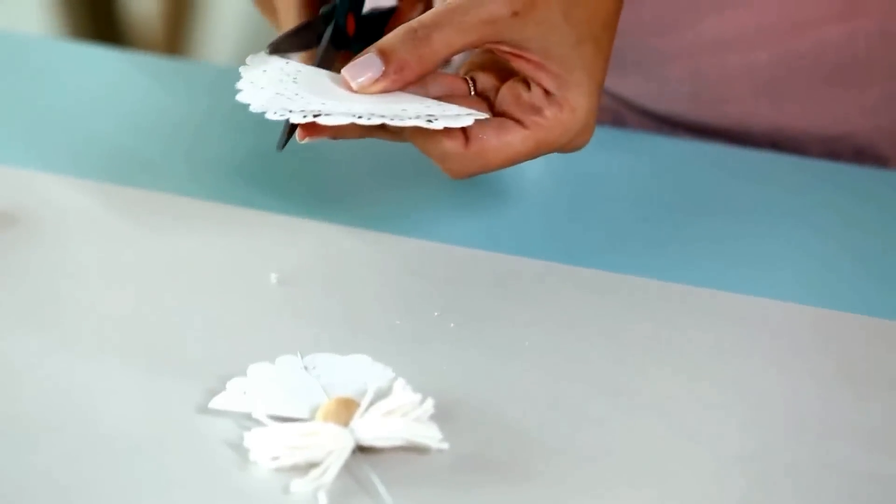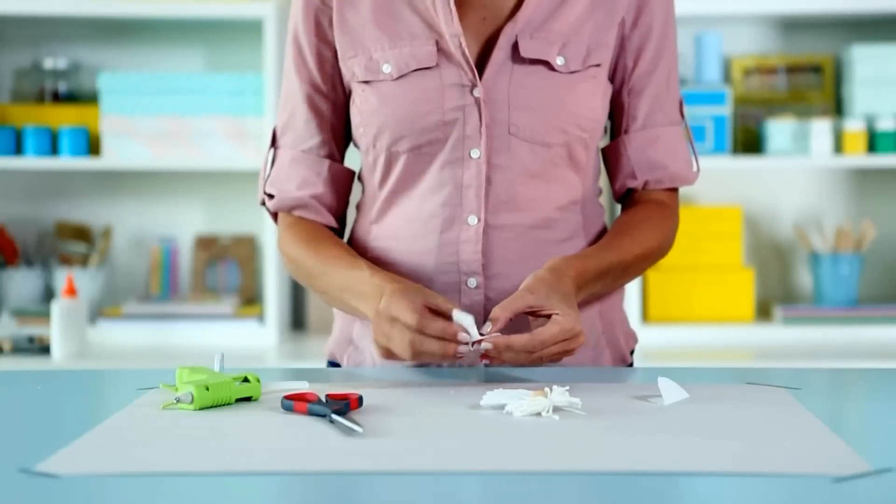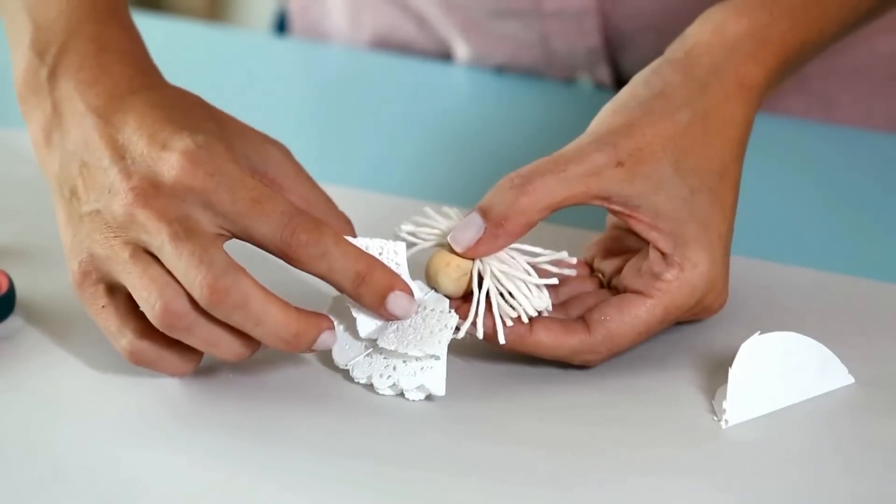Fold another doily in half and cut off the lace part. Fold the strip into quarters and glue the crease to cover the wire.